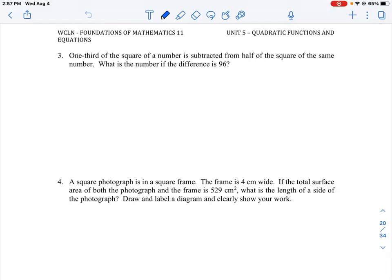Okay, so let's take a look at question number three. We have a word problem here, which is like a number problem in this case. It says one-third of the square of a number is subtracted from half of the square of the same number. So what is the number if the difference is 96?